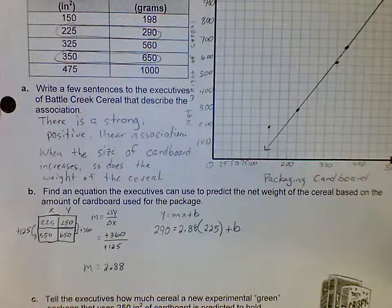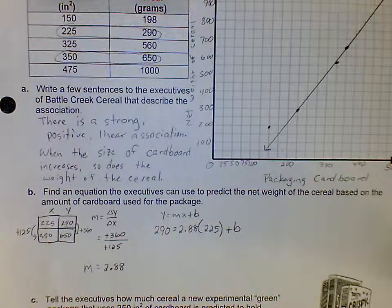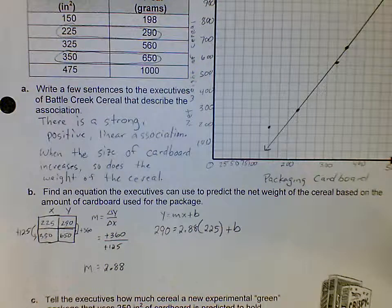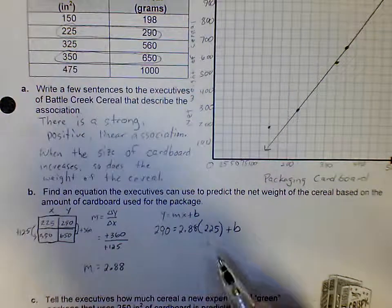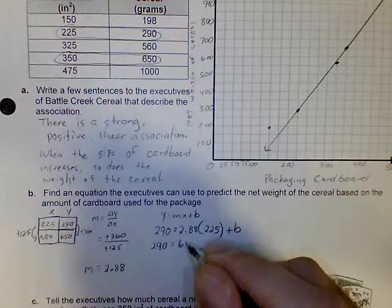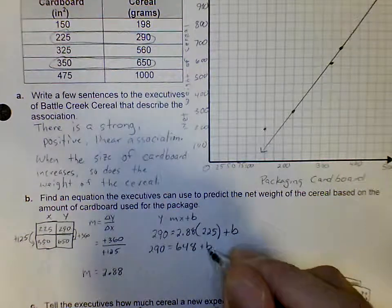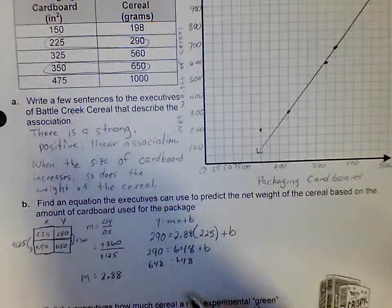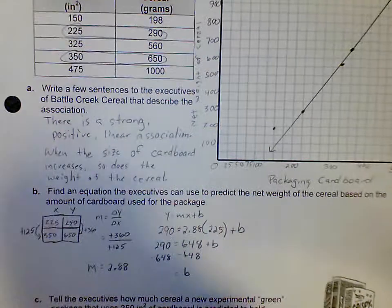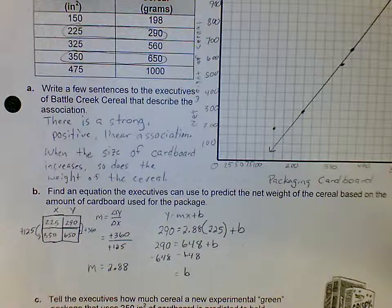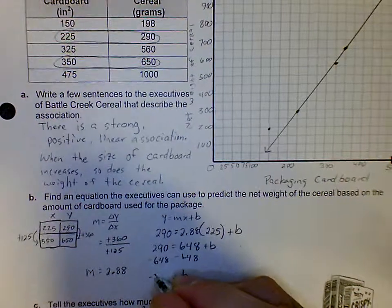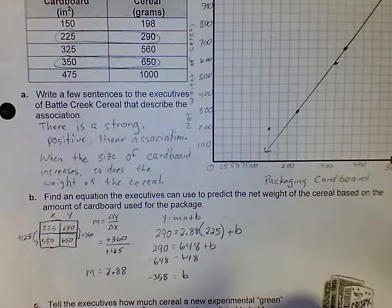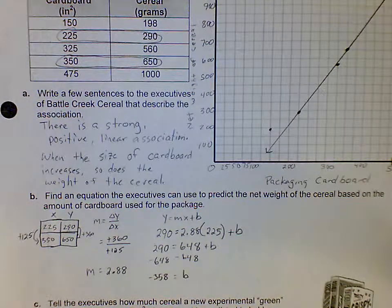Now I can use my algebra skills and solve for b. First thing I do is order of operations, which means I'm going to do the multiplication. So I do 2.88 times 225, that gives me 648. Now I can subtract 648 from both sides. When I do the subtraction, 290 minus 648, I get negative 358. So my y-intercept is going to be negative 358.